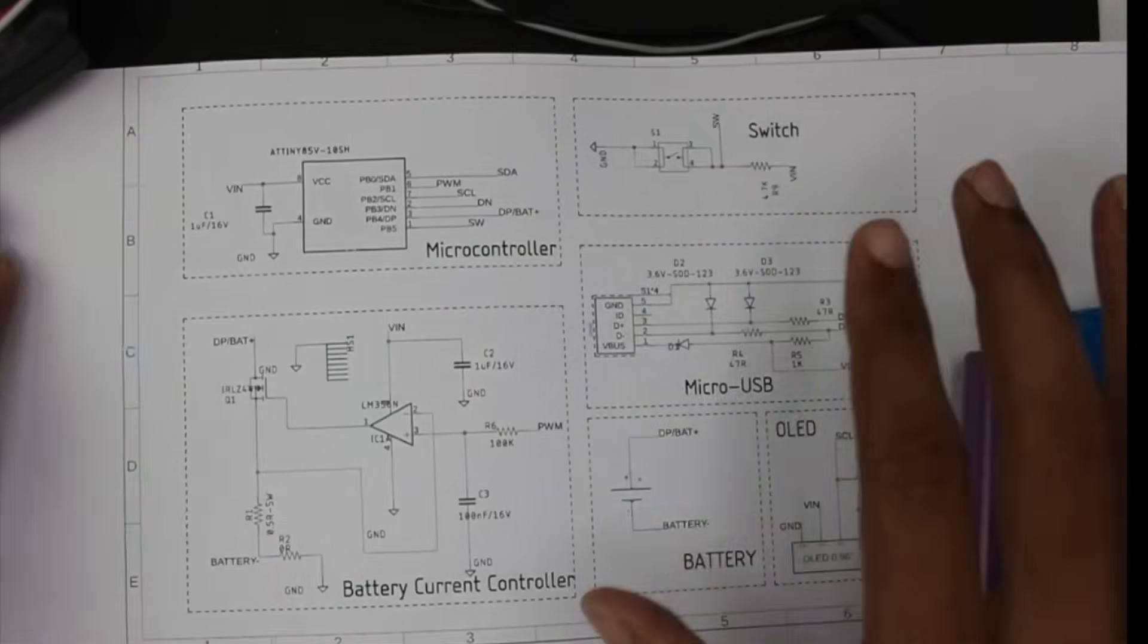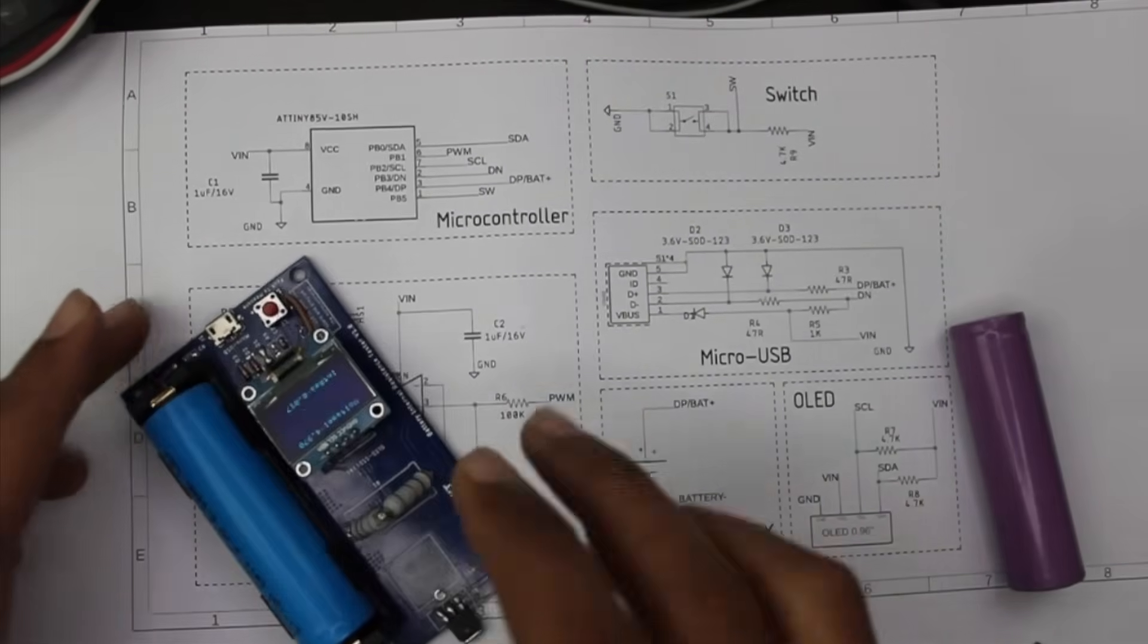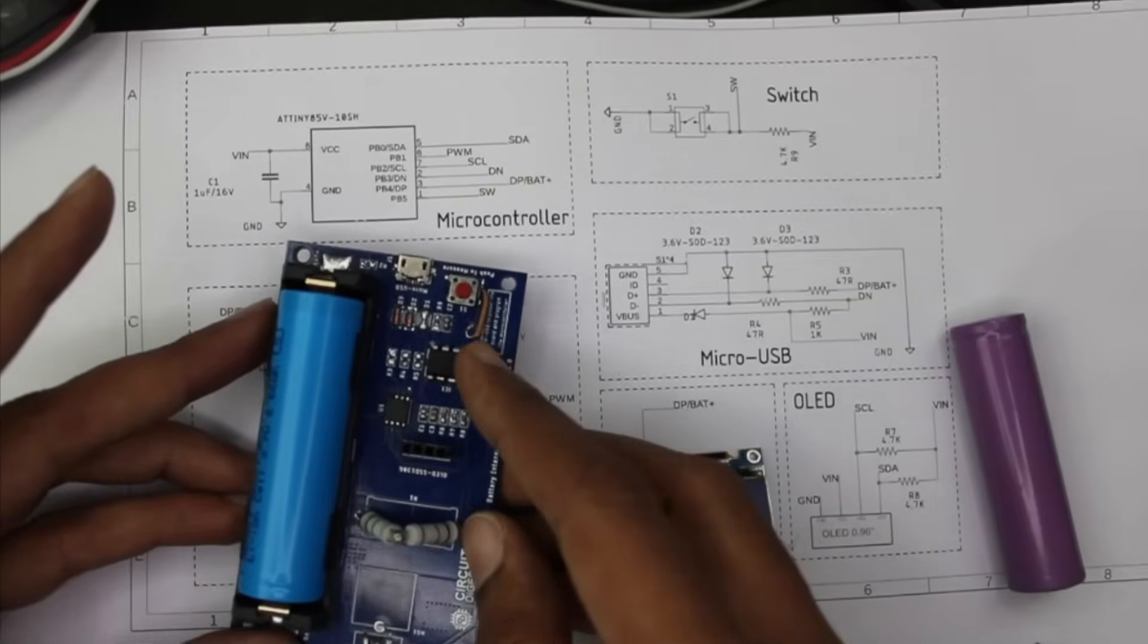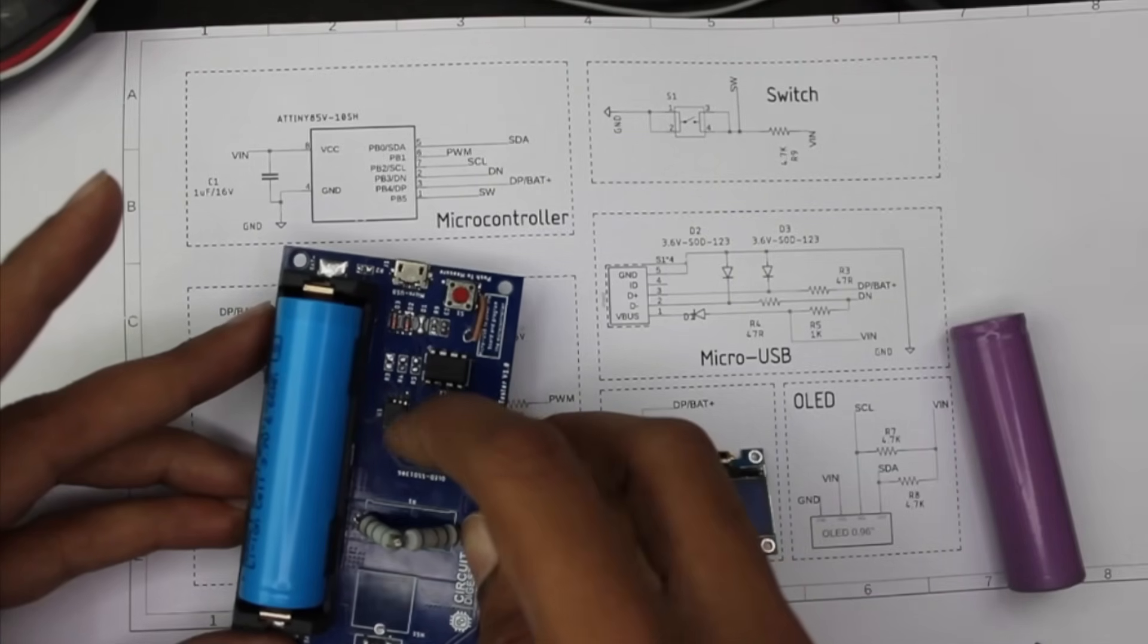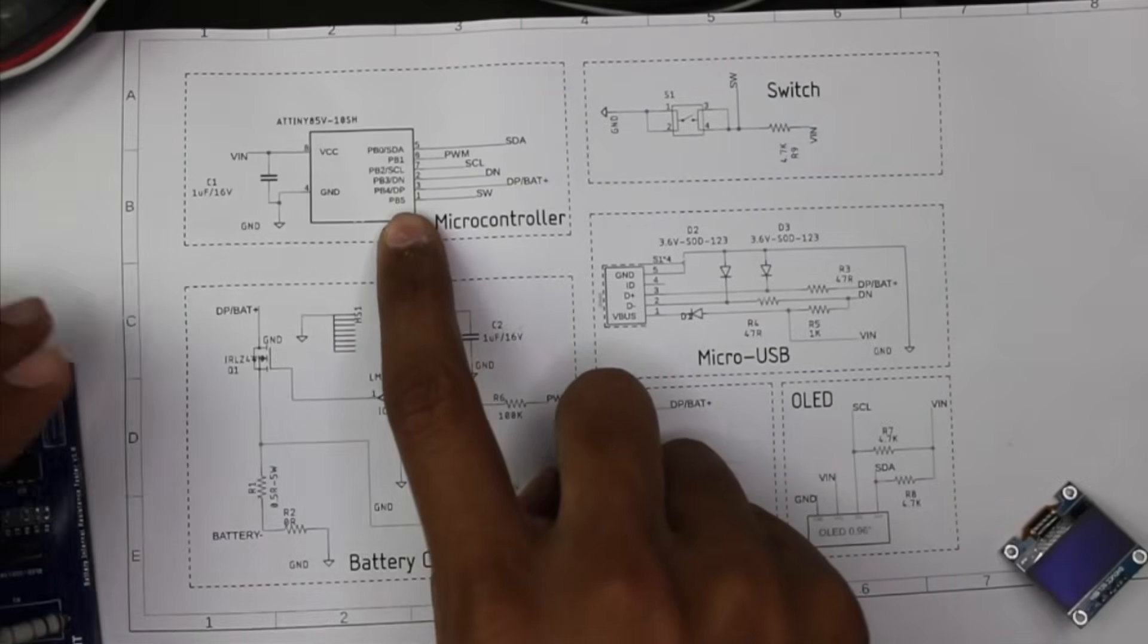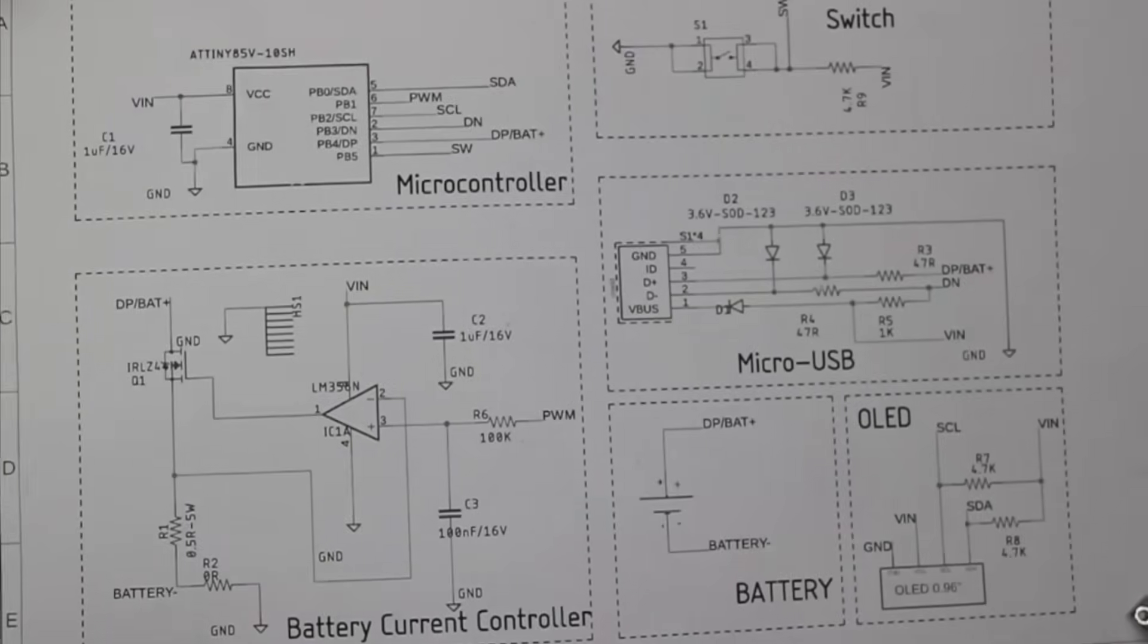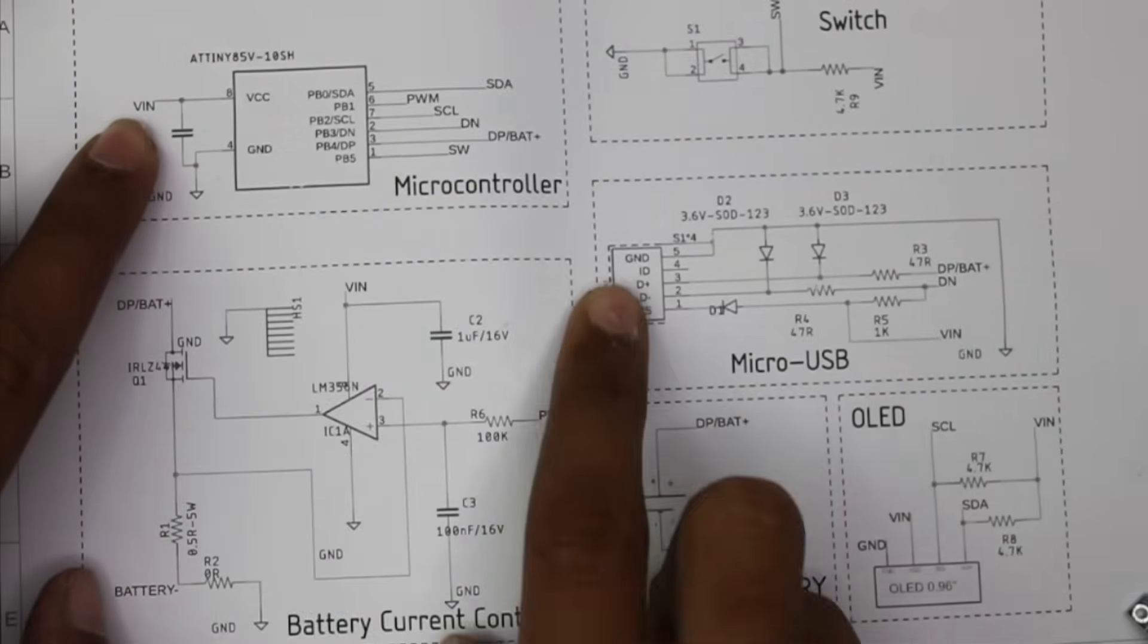Let me remove the OLED screen so you can see the two most important ICs on this board: the ATtiny85 microcontroller and an op-amp. Looking at the schematics, you can find the ATtiny85 microcontroller here. Let's start with this section.